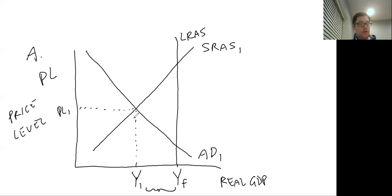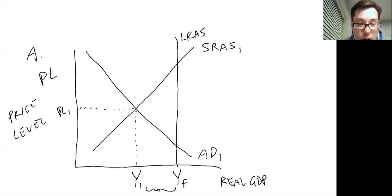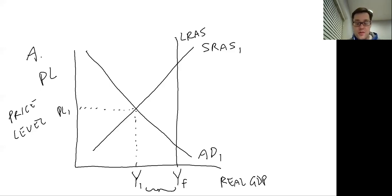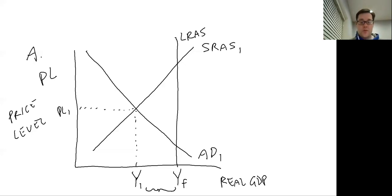For Part B, they ask you to show on the same graph what will happen. Part B says the central bank and government do not take any policy actions to close the output gap. Remember in the classical model, given enough time — and the long run is not a defined amount of time, it's just a theoretical timeframe — if the government doesn't do anything, the economy would tend to gravitate towards full employment.